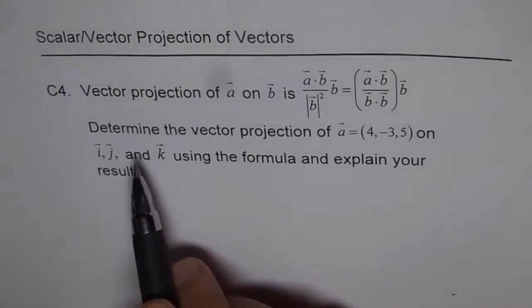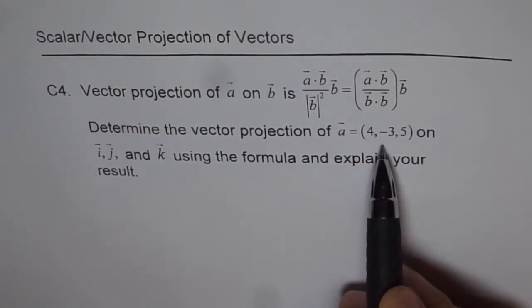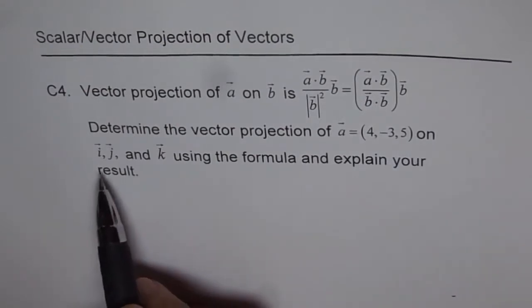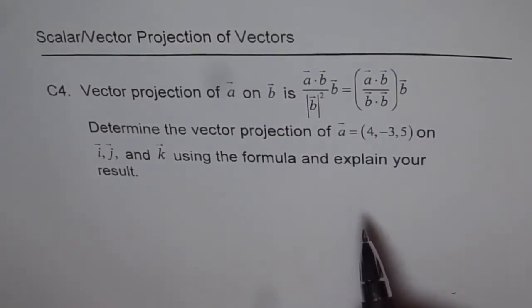Now, determine the vector projection of vector A (4, -3, 5) on i, j, and k using the formula and explain your result.